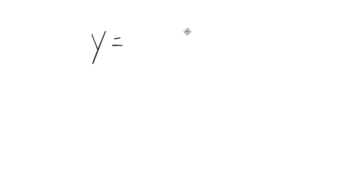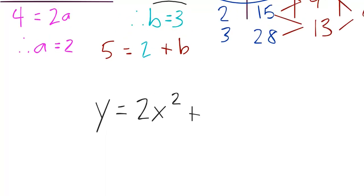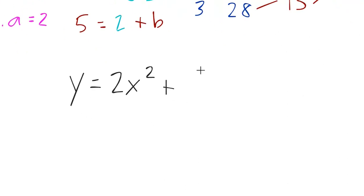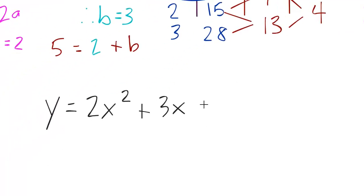y is equal to a, which again up here, a was 2. So ax squared, so 2x squared plus bx. We found b was equal to 3 right there. There we go. Let's move that. Plus 3 times x. And we already found out in the very, very beginning that c was equal to 1. So we'll plug that back in. And that's our quadratic.